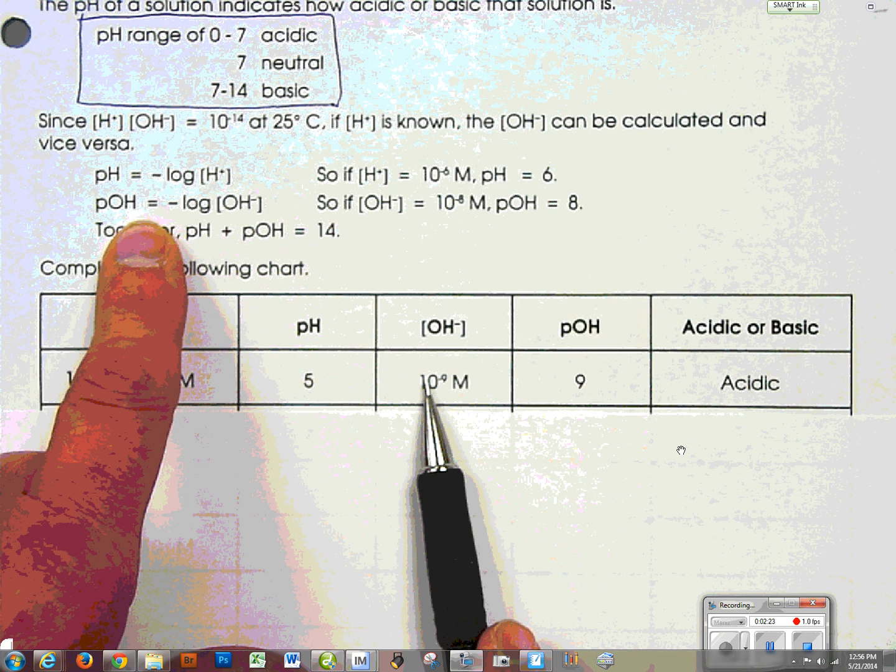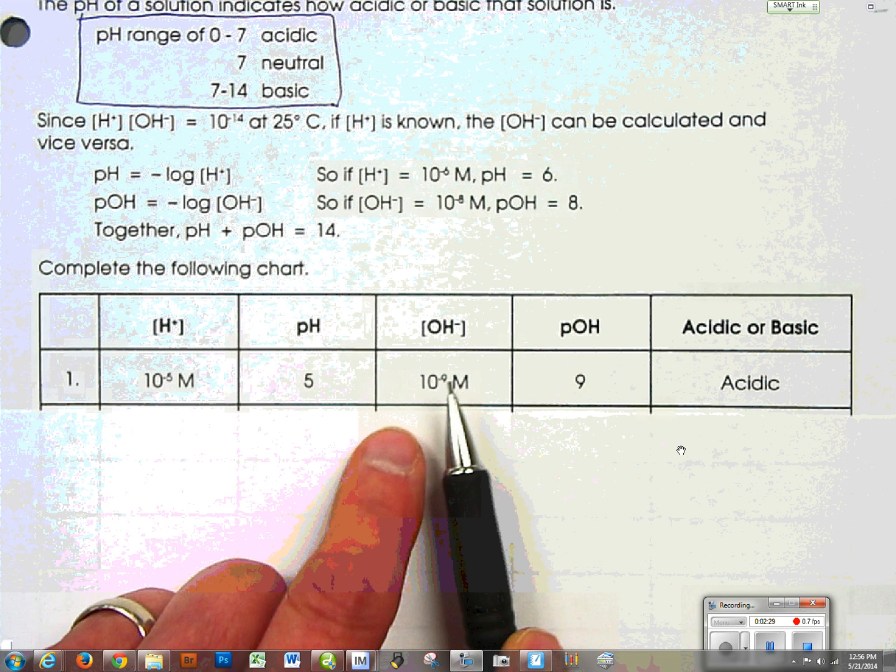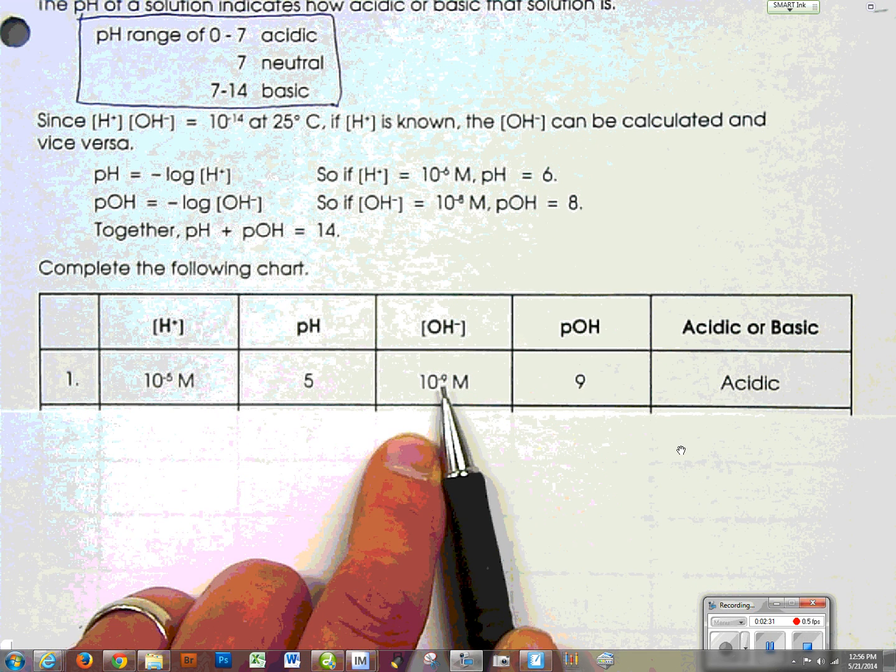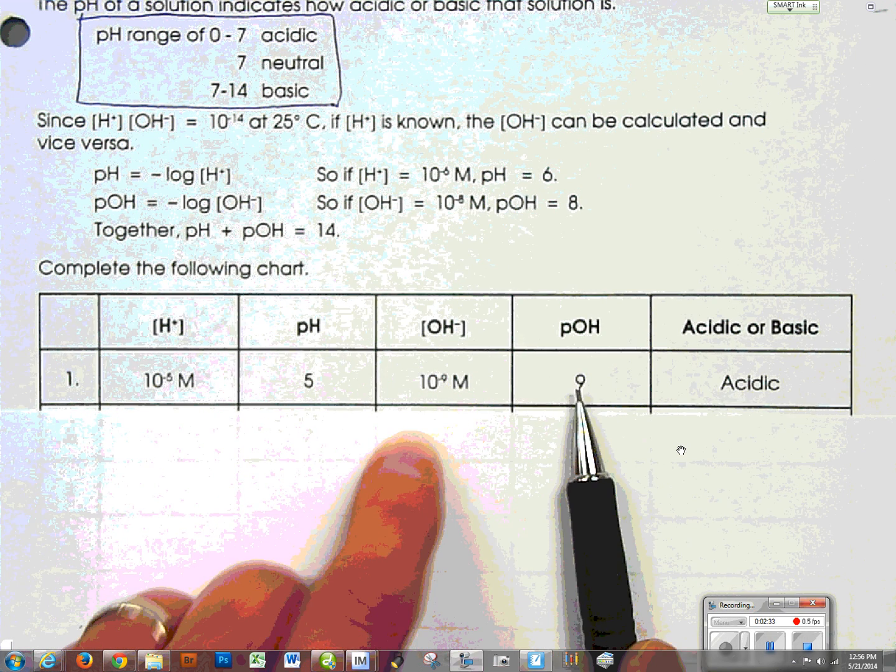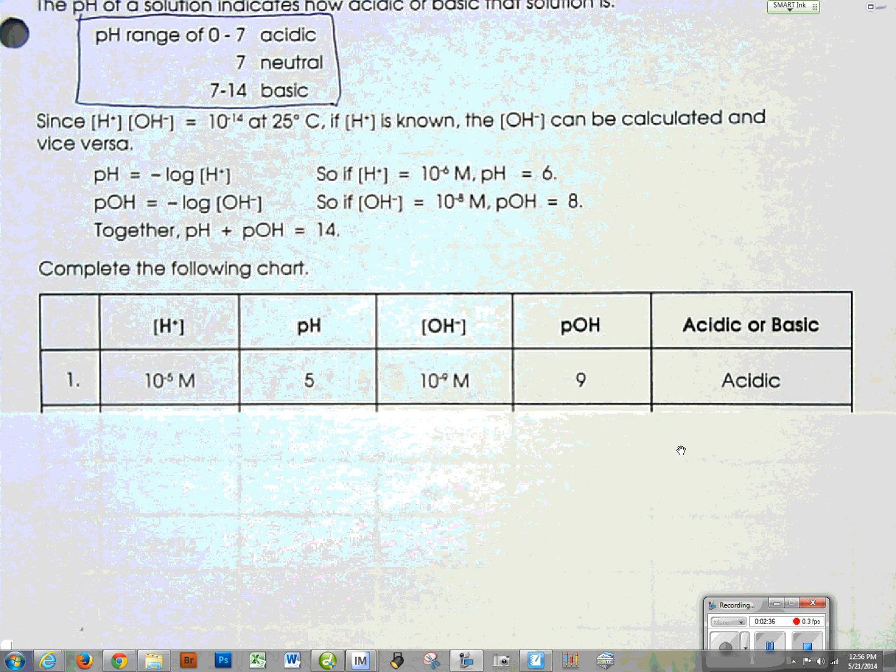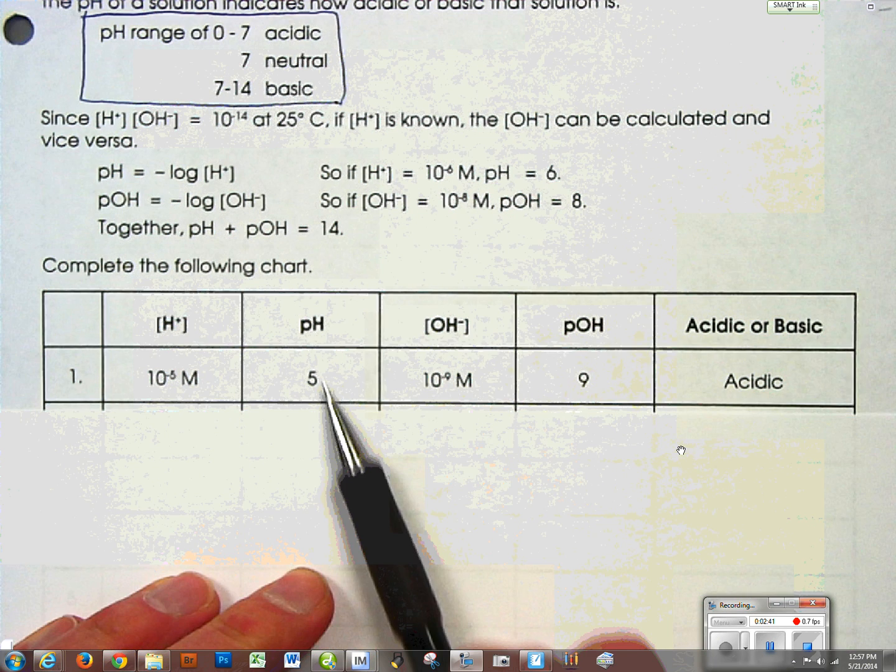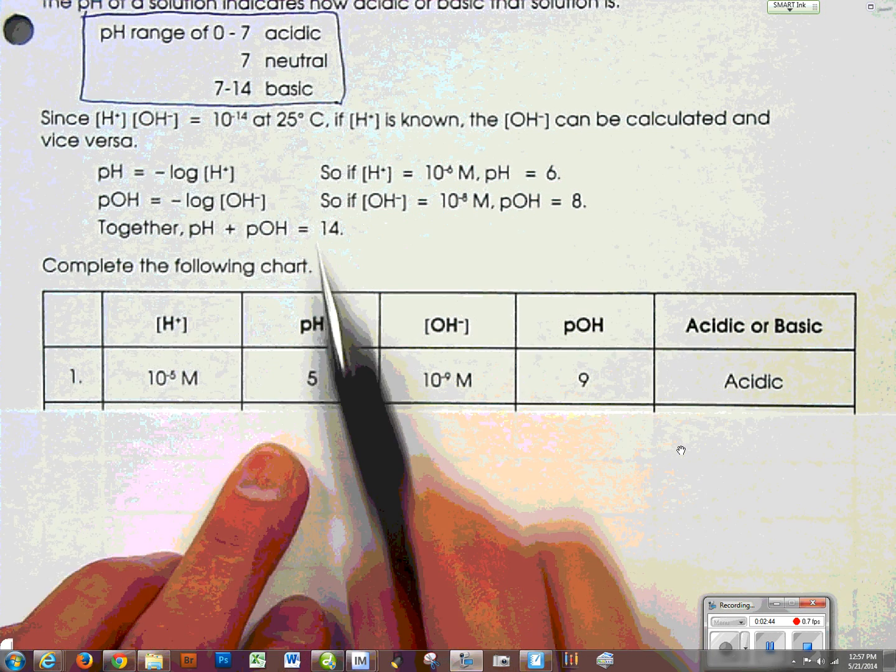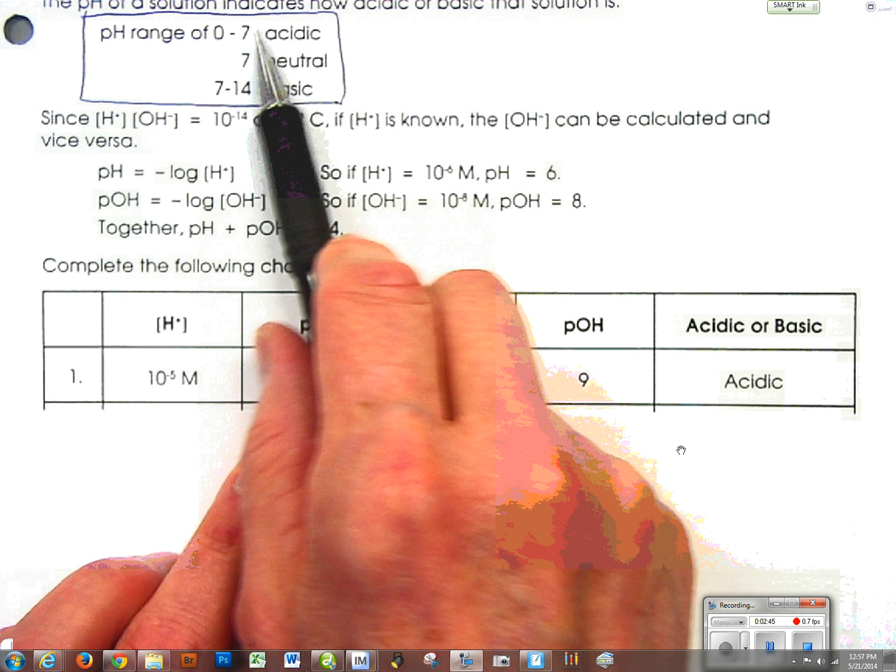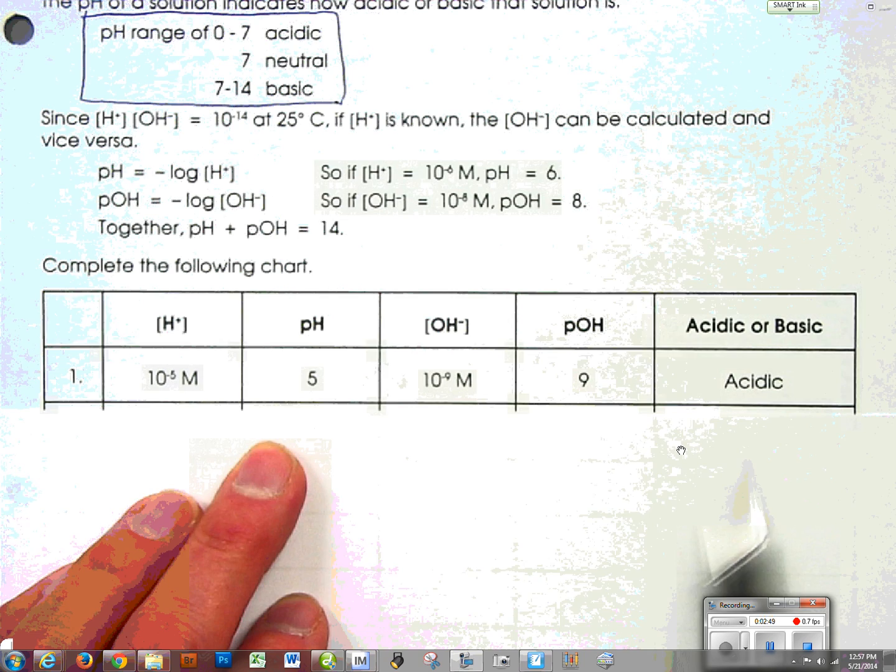So if that's our concentration, all we have to do is take the minus log, which means we take this number, change the sign, and it becomes the pOH. Now, all you have to do to answer this last column is look at the pH, and the pH below 7, well, below 7, you can see is your acidic, and that's why this guy is acidic.